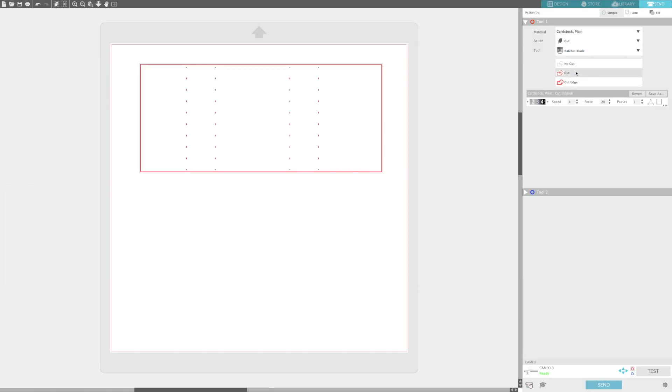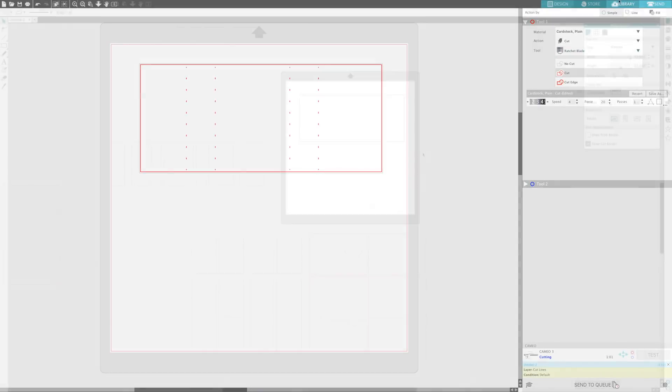Pick the pattern paper or cardstock that you want to use. I use a ratchet blade and keep the settings as is, then send it to my machine and I'll show you that piece that I cut from a little bit later.